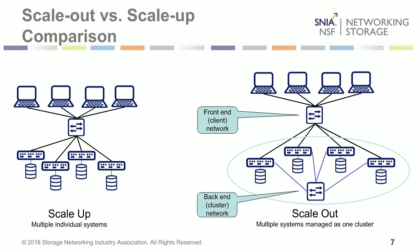Here's an illustration. On the left side we have a typical scale-up scenario — four scale-up storage systems all connected to the network connecting to clients or servers, with each system acting independently and managed separately. On the right, we have a scale-out storage system with four storage nodes running as a single cluster, connecting to both a front-end or client network and a back-end or cluster network that connects the different storage nodes together. In some systems these are one network; in others they are two separate networks.